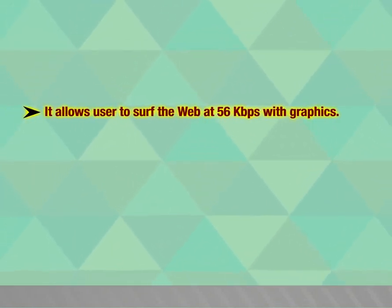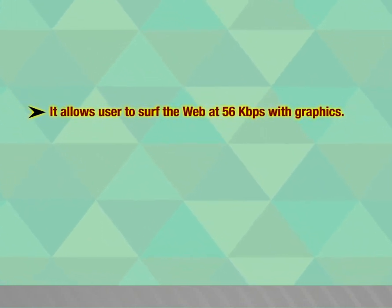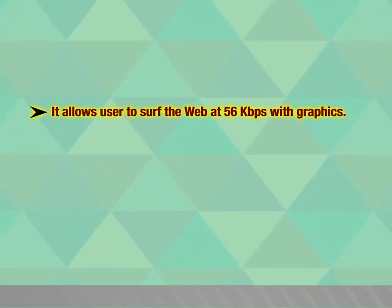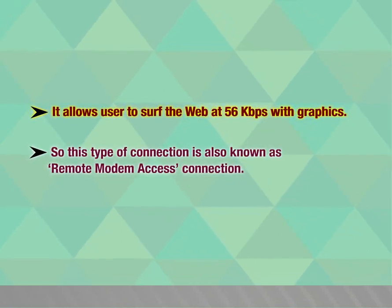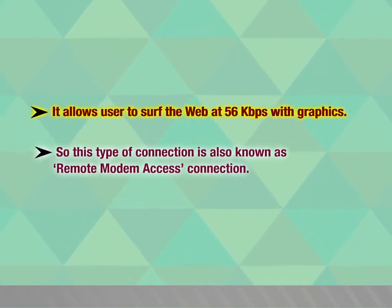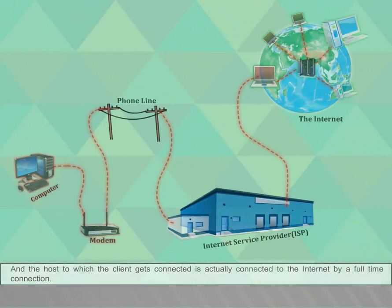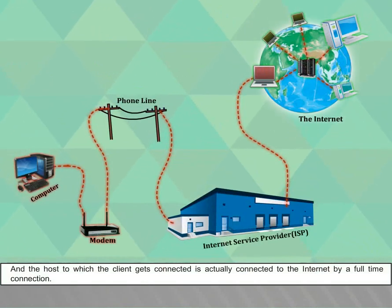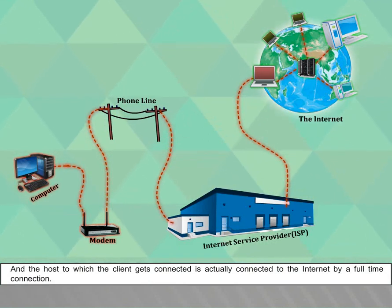It allows the user to surf the web at 56kbps with graphics. This type of connection is known as remote modem access connection. The host to which the client gets connected is actually connected to the internet by a full-time connection.